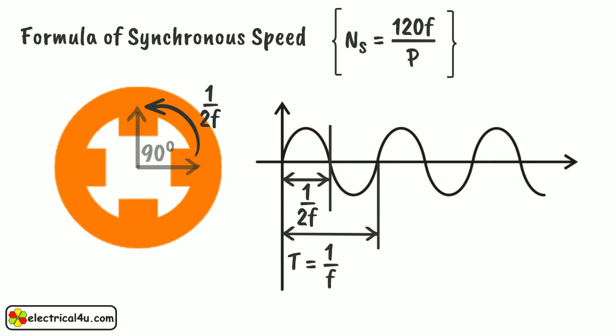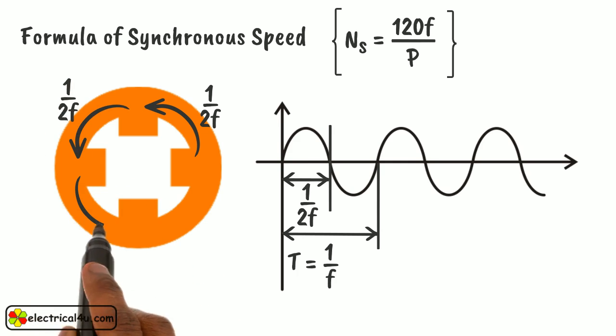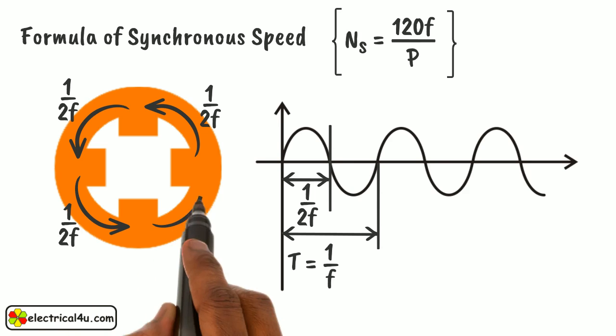If the supply frequency is still the same, any two adjacent poles alter their polarity in the same 1 by 2f second. In that case, the magnetic field takes the same 1 by 2f seconds to propagate physically 90 degrees.